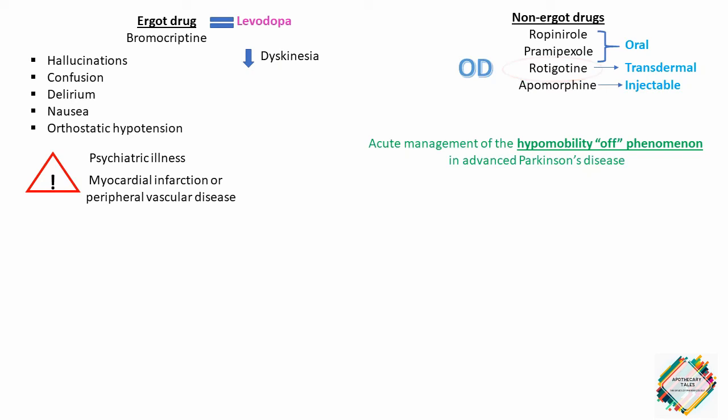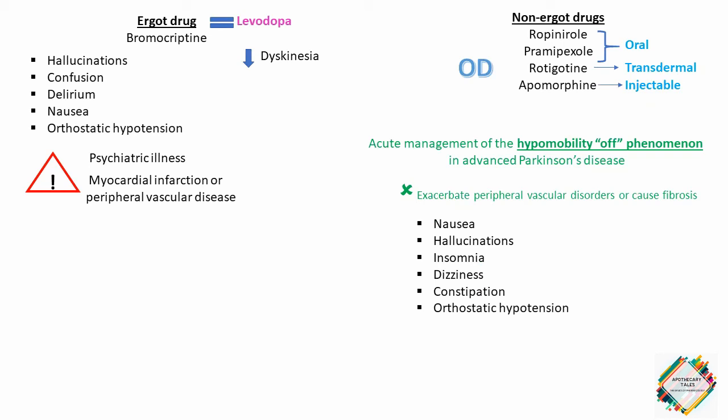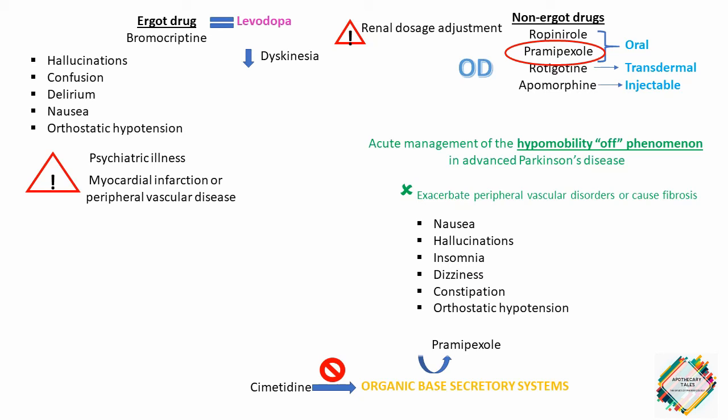Unlike the ergotamine derivatives, these agents do not exacerbate peripheral vascular disorders or cause fibrosis. Nausea, hallucinations, insomnia, dizziness, constipation and orthostatic hypertension are among the most distressing side effects, but dyskinesias are less frequent than with levodopa. Pramipexole is mainly excreted unchanged in the urine and dosage adjustments are needed in renal dysfunction. Cimetidine inhibits the renal tubular secretion of organic bases and may significantly increase the half-life of pramipexole.